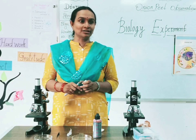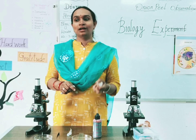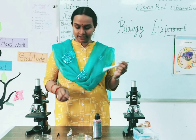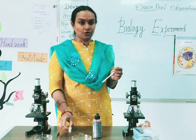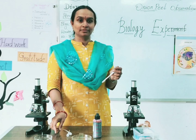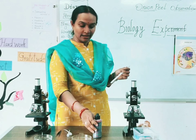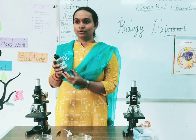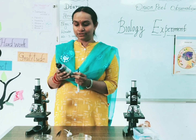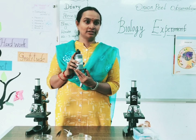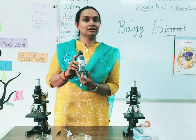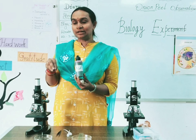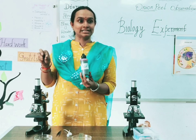So for that, what are the materials required? We require an onion, a microscope, a cutter, dropper, forceps, and a color. We add a color to this — that is safranin solution. We add this color to see the onion peels clearly. That helps us to identify the cells clearly.